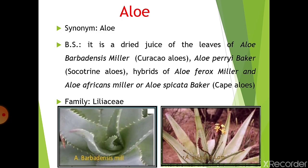Laxatives are indicated in constipation and evacuation of the bowel prior to diagnostic procedures or surgeries. Let us see which drugs come under this category. The first drug is Aloe. The biological source: it is the dried juice of the leaves of Aloe barbadensis Miller, also called Curaçao aloes; the second variety is Aloe perryi Baker, also called Socotrine aloes; and the third variety is hybrids of Aloe ferox Miller and Aloe africana Miller or Aloe spicata Baker, called Cape aloes. This drug belongs to the family Liliaceae.